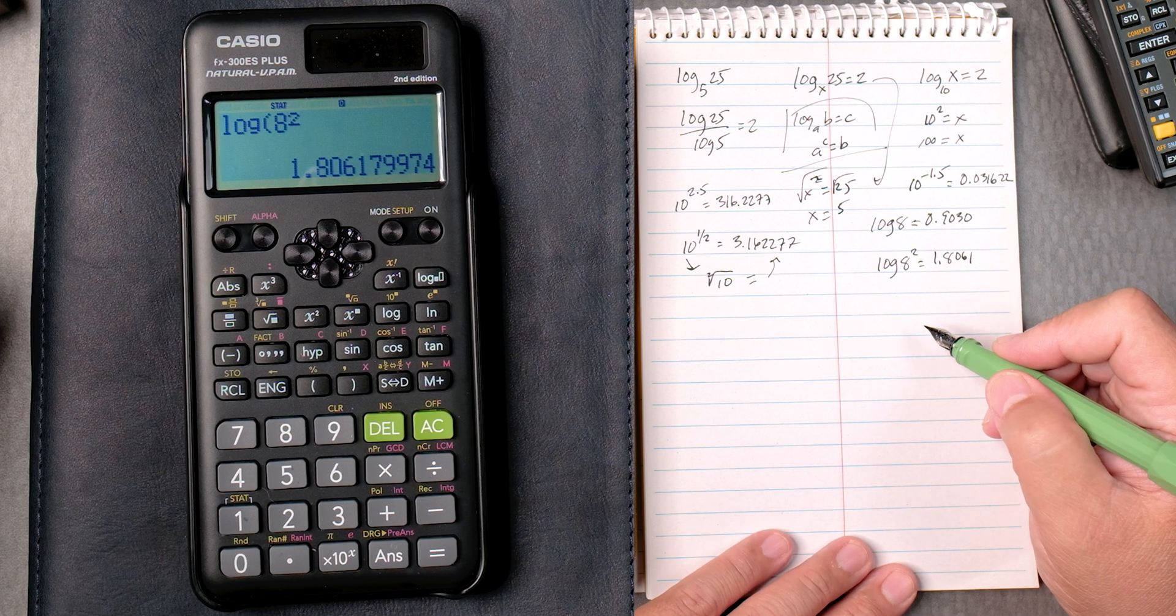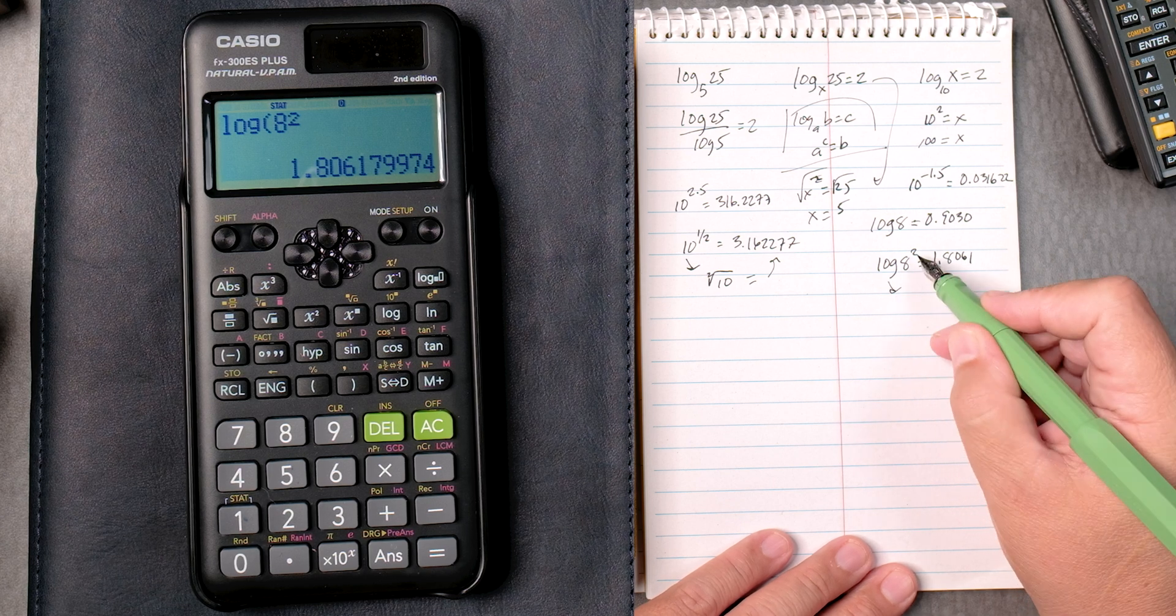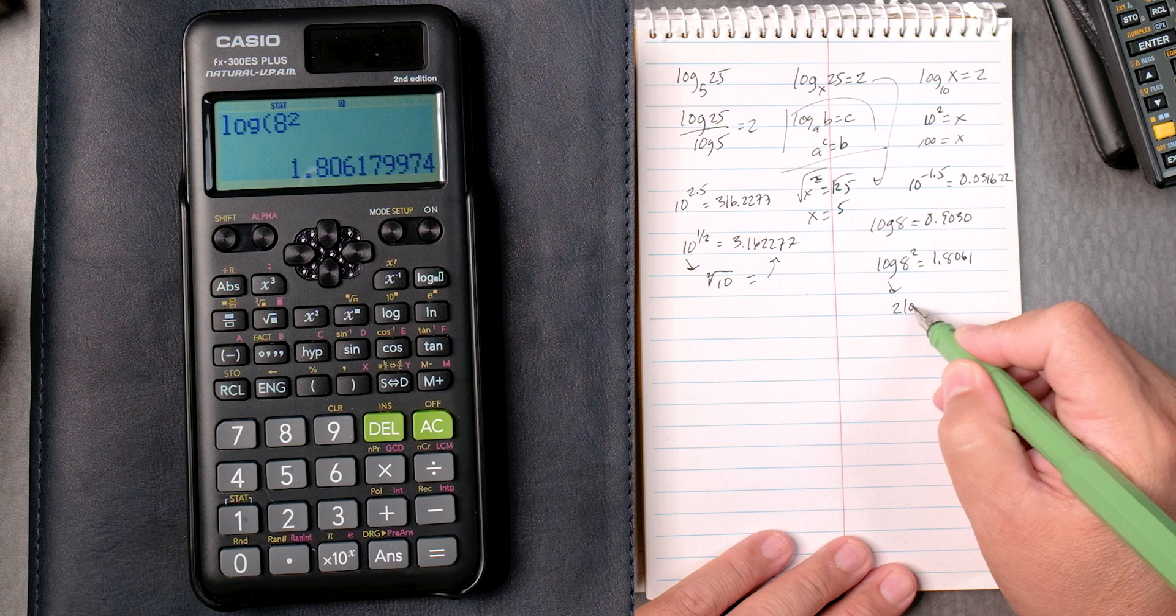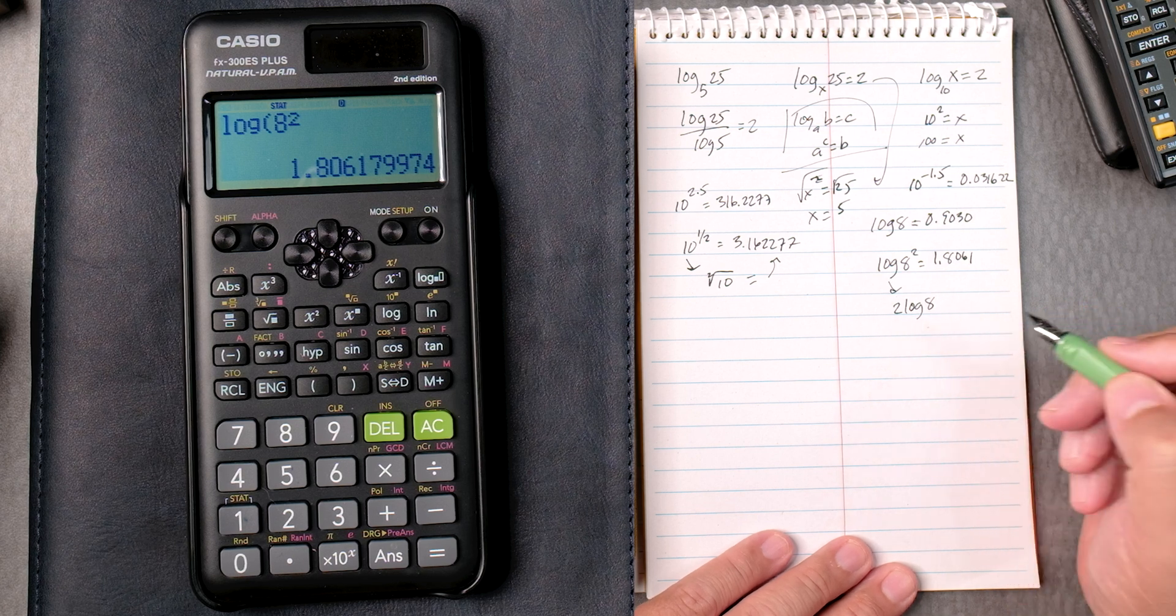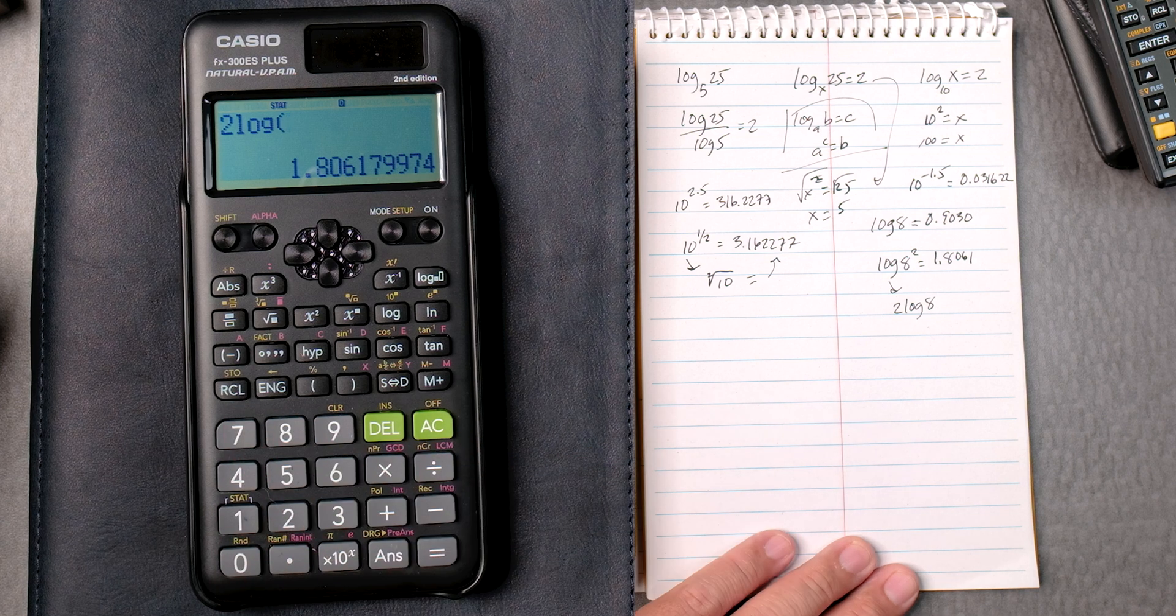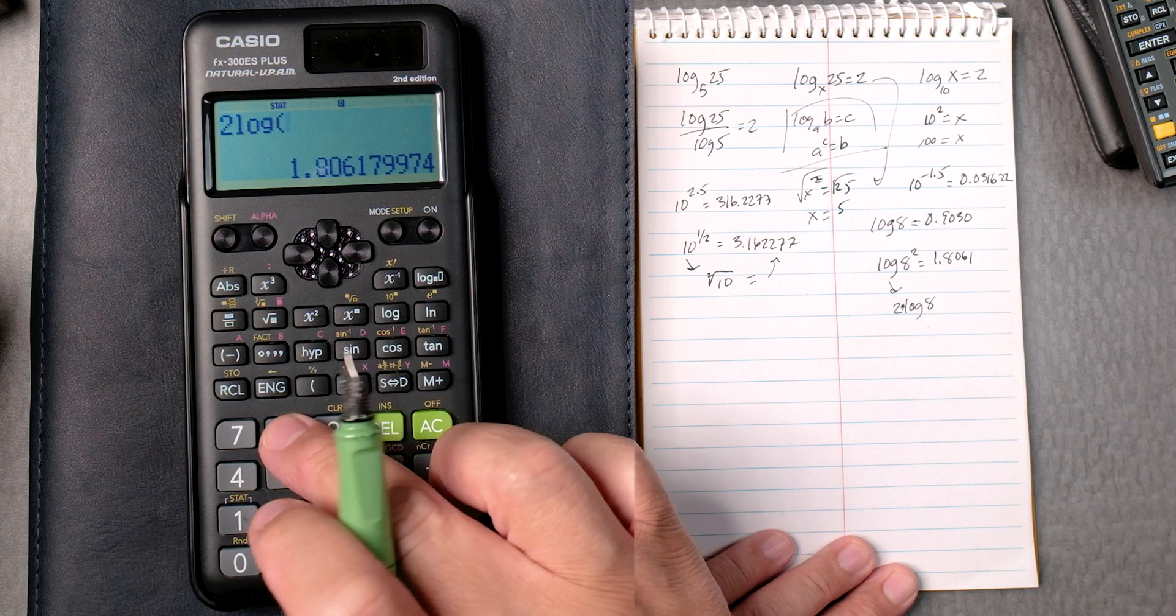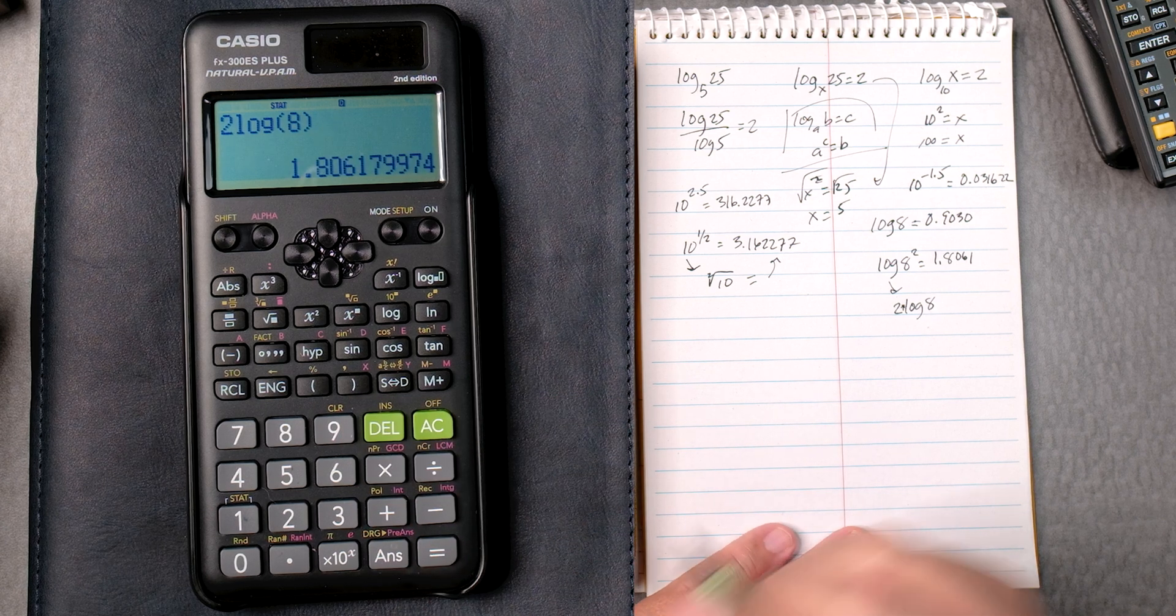And that can also be rewritten. There's a rule that says that the 2 can be run down. So 2 log of 8. So we can say 2 log. It should be automatically multiplied. And then 8. You can close it if you like. Equals. Same answer.